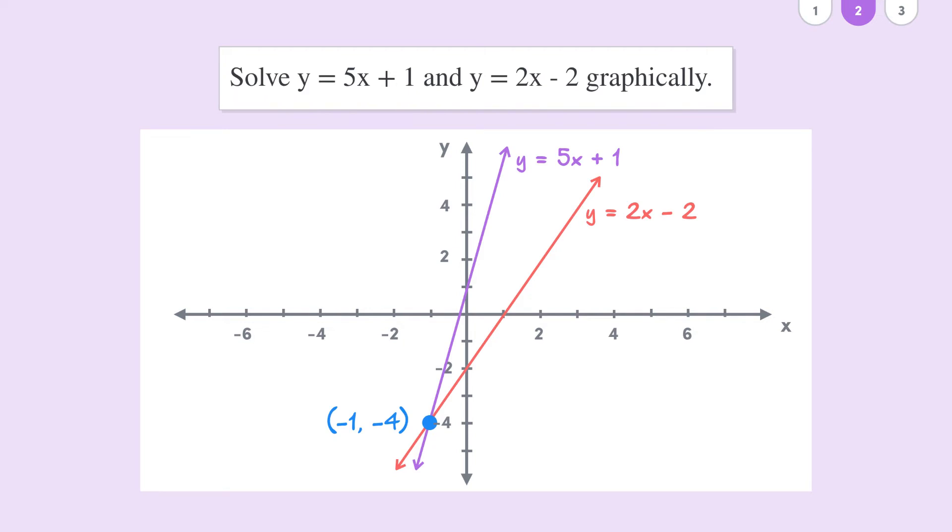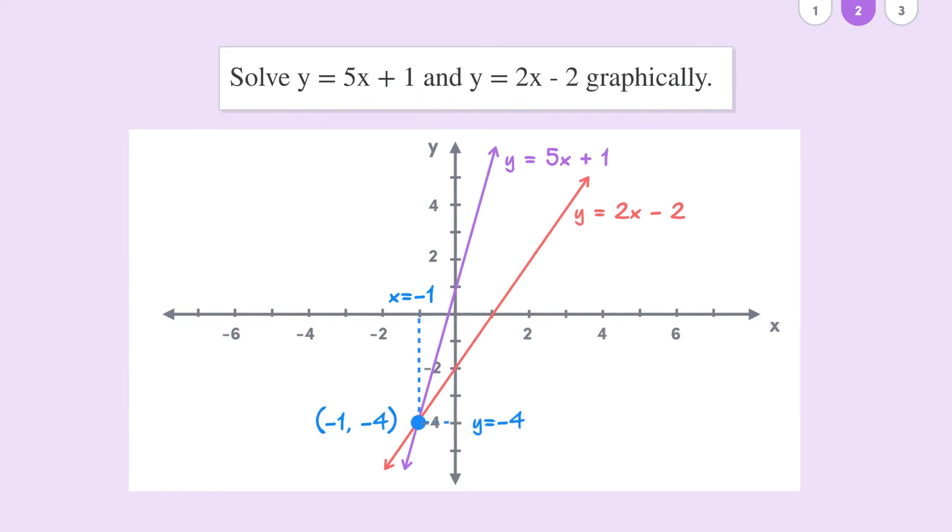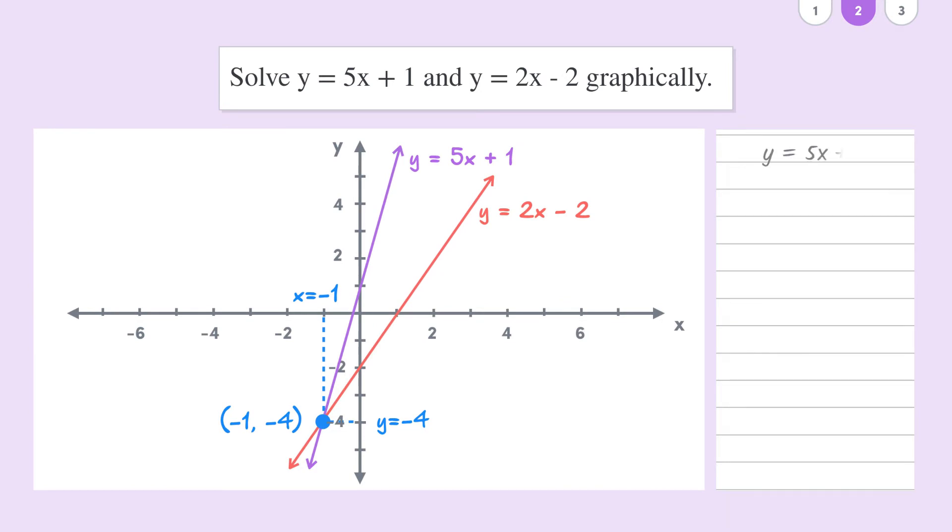Now we can see that at this point x equals minus 1 and y equals minus 4, and if we substitute these values into either of our equations then our equations hold and are equal. It's often good practice to substitute values back in just to make sure that you're correct. And if you're not, it usually means that maybe your scale on the graph is a little bit off.